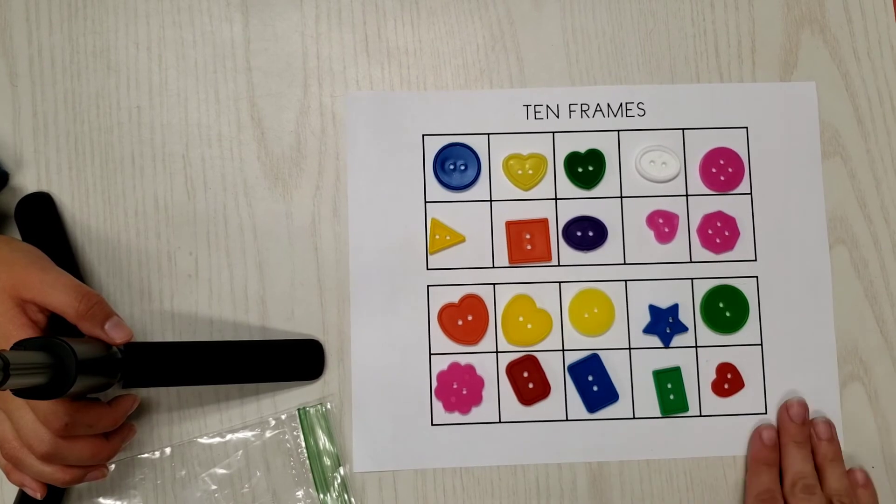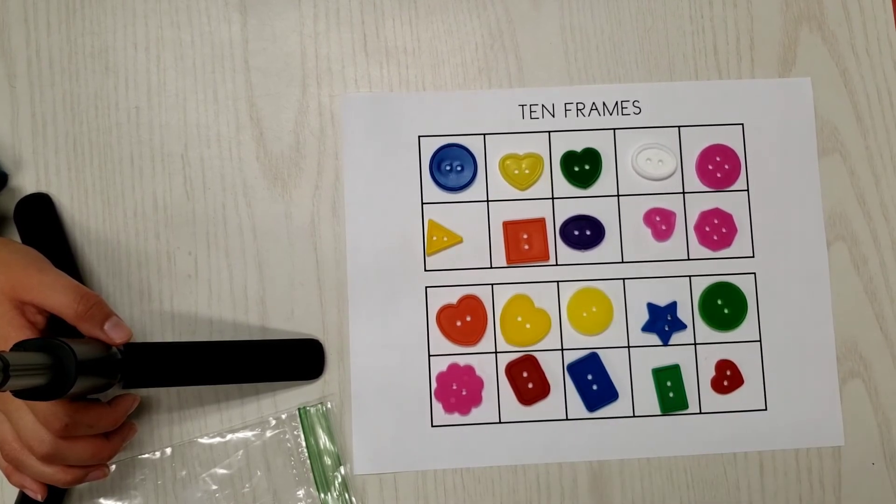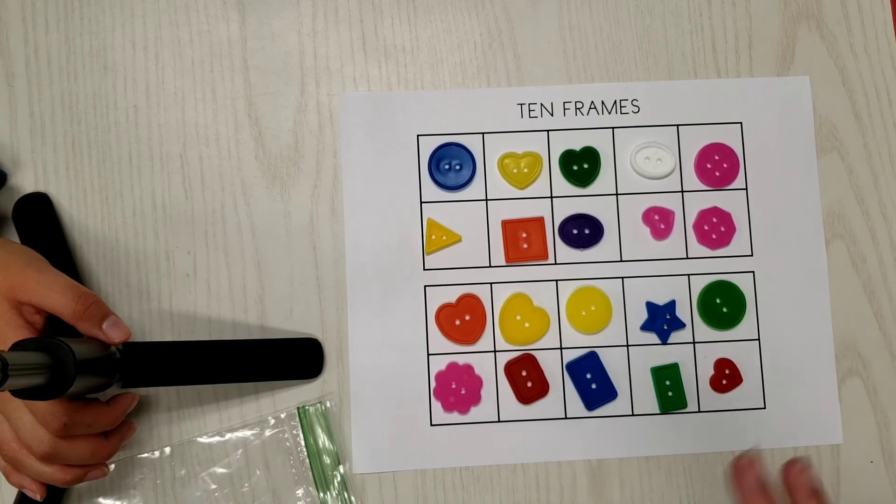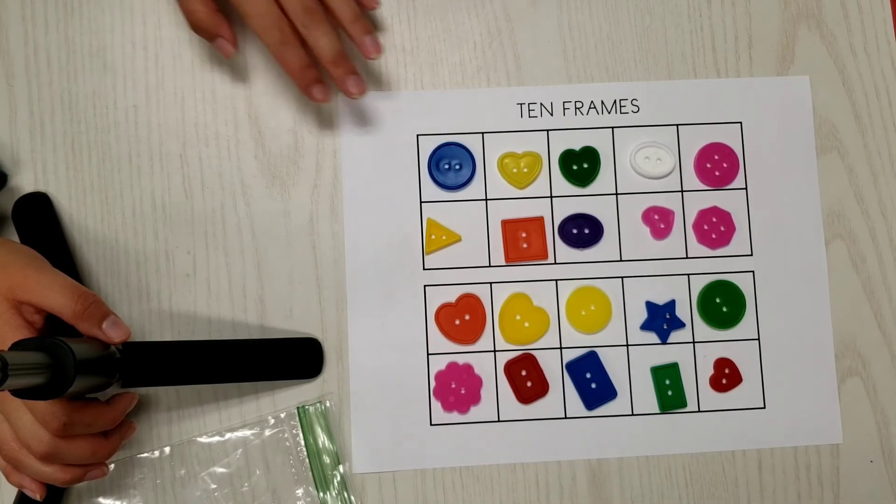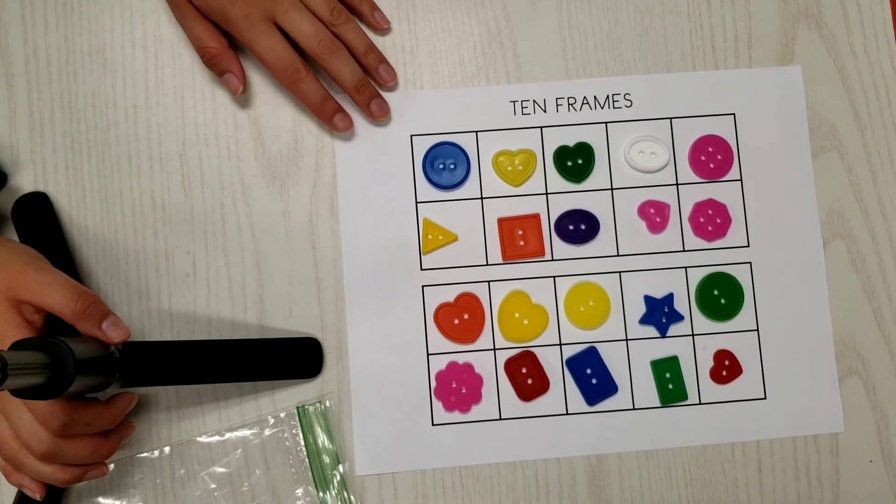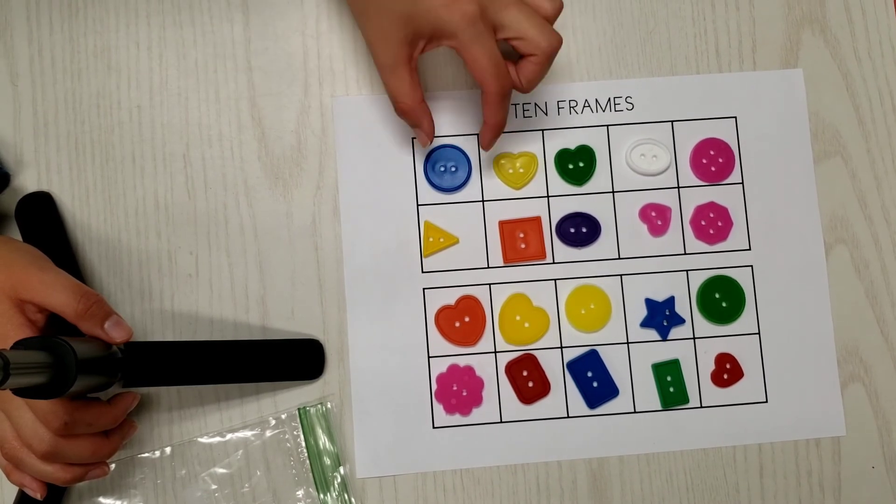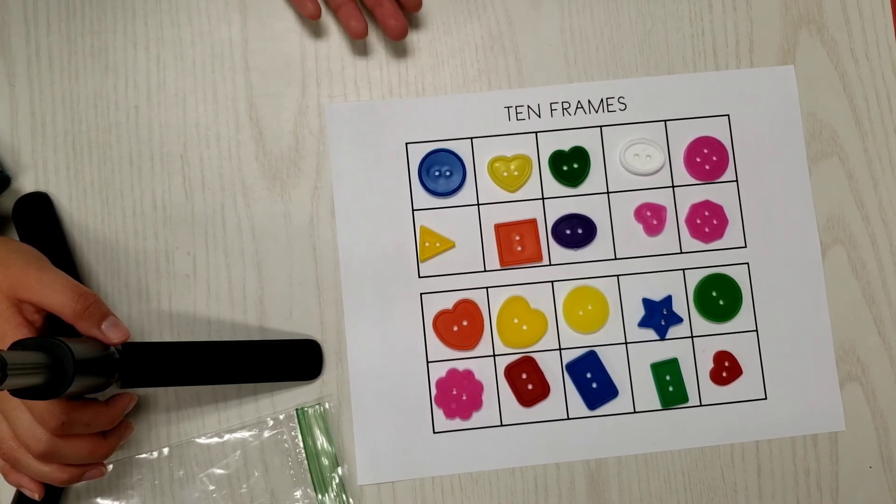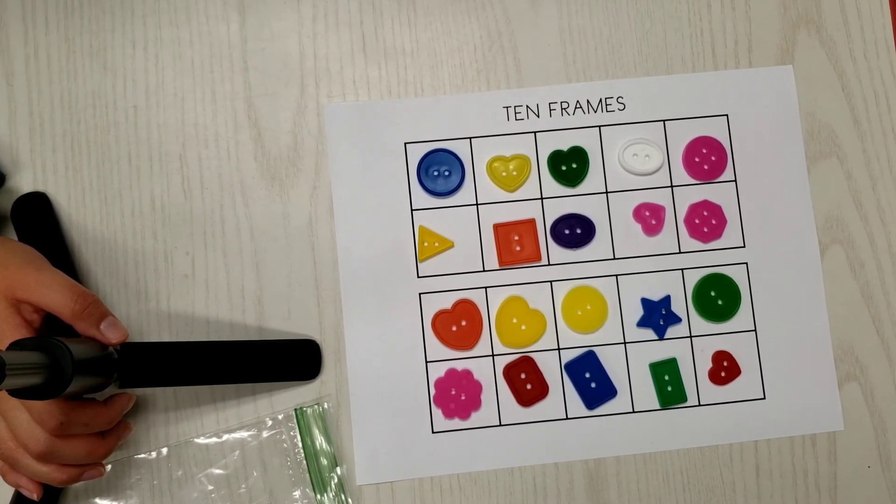And you can also save this paper, and you can use this paper with other objects in your house, coins, little toys, and they can practice their counting that way, too. Y pueden guardar esta hoja, y pueden usar diferentes objetos para ponerlos en los cuadros y así contar con los diferentes objetos, como juguetes o fichas, así por el estilo.